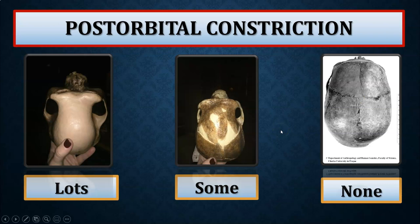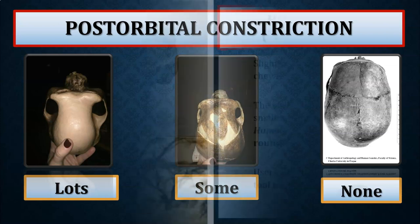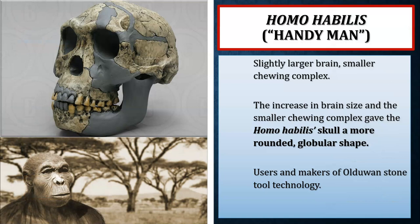Post-orbital constriction is a feature we'll look at in labs 14, 15, and 16, and it's a critical feature that helps determine whether you're looking at an australopithecine or a member of genus Homo. Homo habilis has the nickname 'the handyman' because it is believed to be the very first species that relies heavily on stone tool culture. It's possible that later australopithecines also utilized stone tools, but with Homo habilis and onward we see a commitment to and reliance upon tools for survival, with a slightly larger brain size and smaller chewing complex giving the skull a more rounded, globular shape.